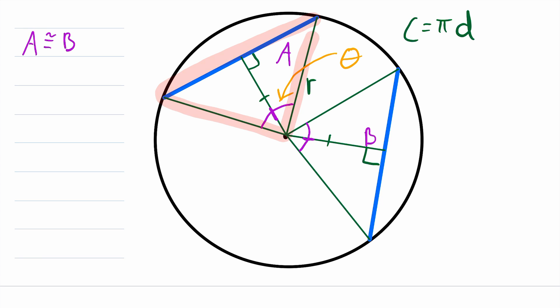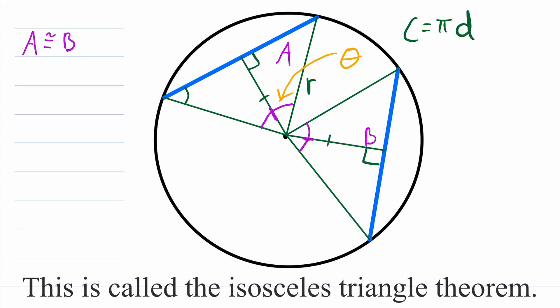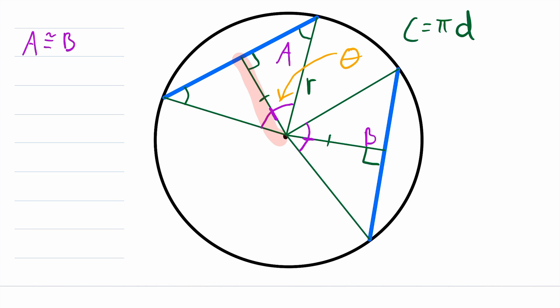Now notice that this bigger triangle is an isosceles triangle because it has these two congruent sides. Thus, we know that these two angles of the triangle are congruent because those are the angles opposite the congruent sides. Then, since these two little right triangles are congruent, we already know that this angle is congruent to this angle, and we just showed that this angle is congruent to this angle, which means that this angle is congruent to this angle.